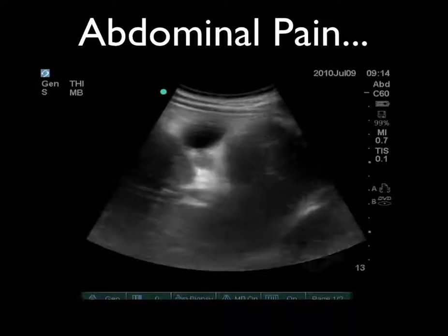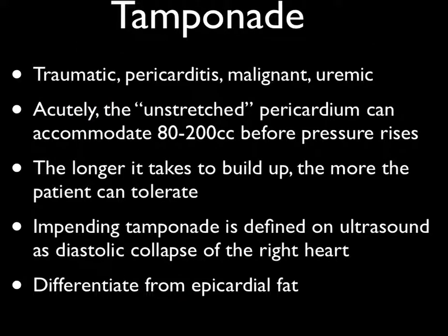What really is pericardial tamponade? Pericardial tamponade is when you have diastolic collapse of the right heart — that's the main thing. During diastole you would expect the heart to fill, but if it paradoxically collapses during diastole, there's so much fluid around the heart in the pericardium that it's causing the heart to collapse when it should be expanding. The sonographic definition is diastolic collapse of the right heart. The clinical definition is a large pericardial effusion plus hypotension or plus severe shortness of breath.